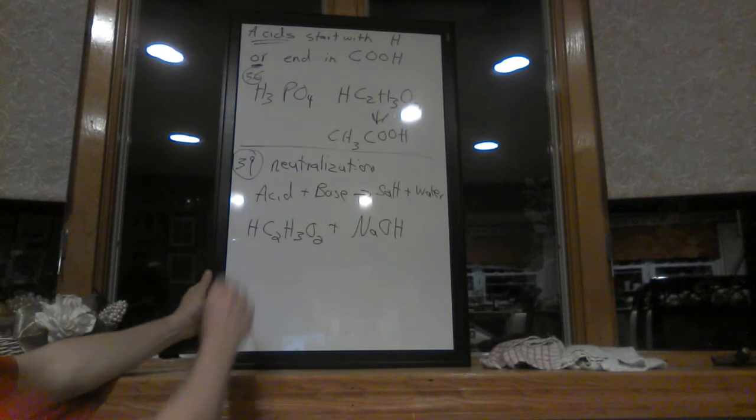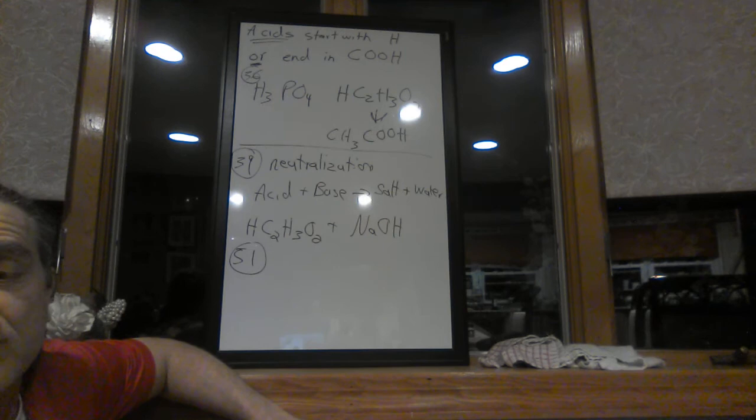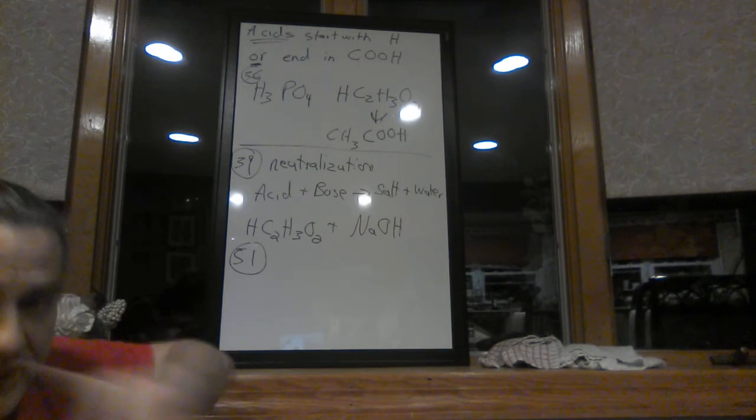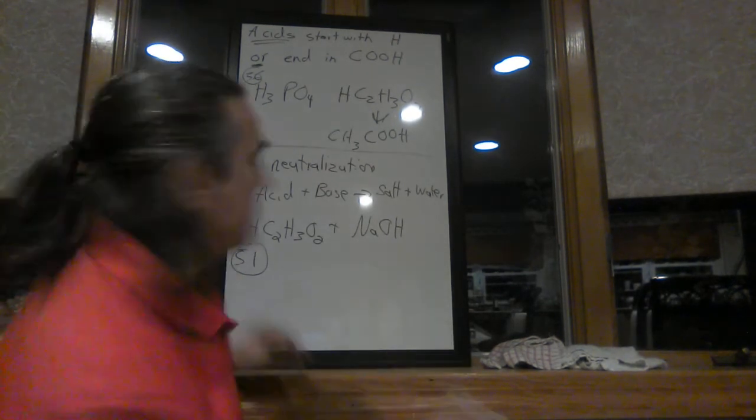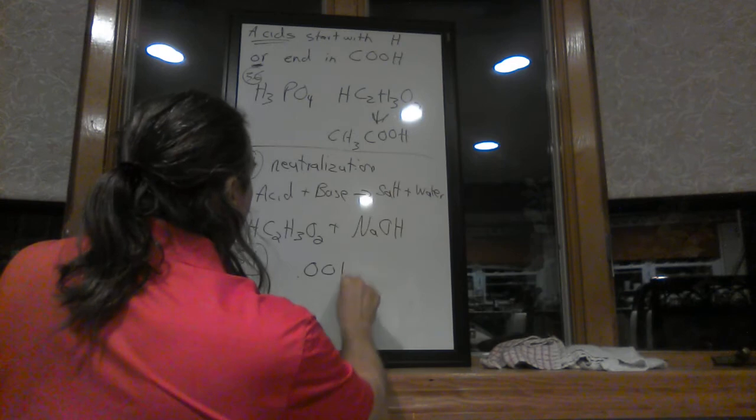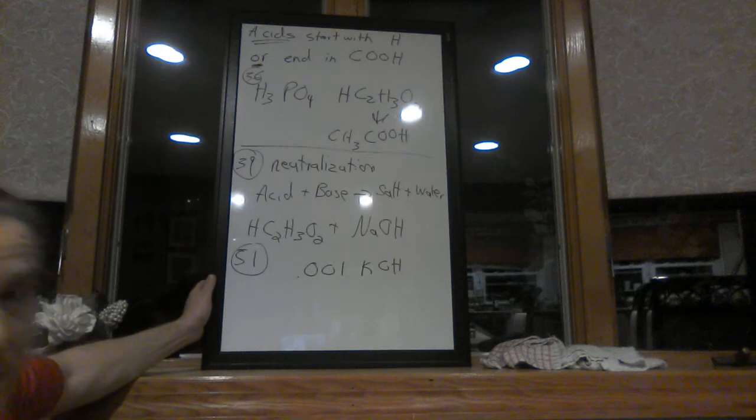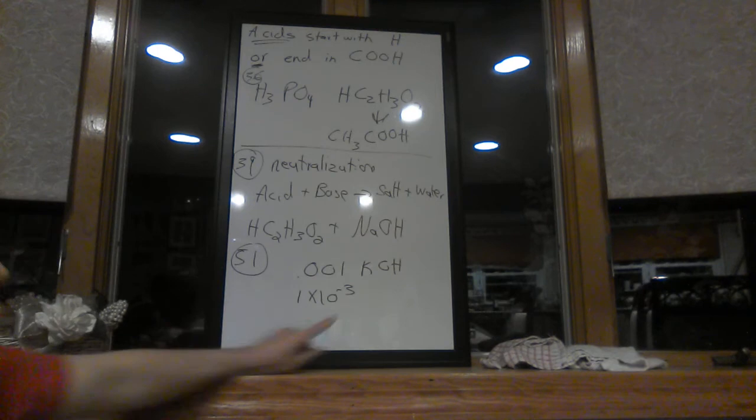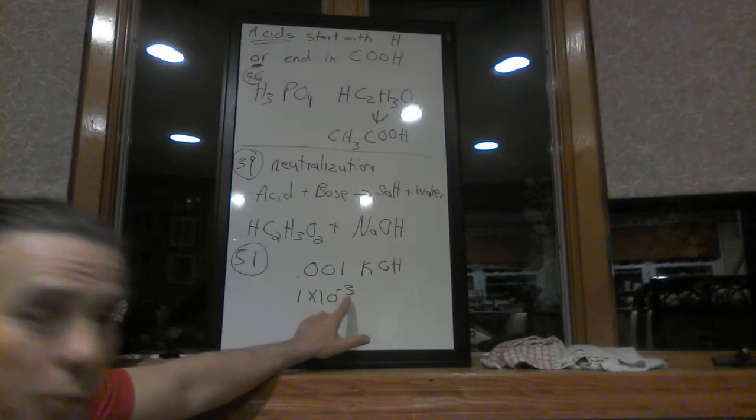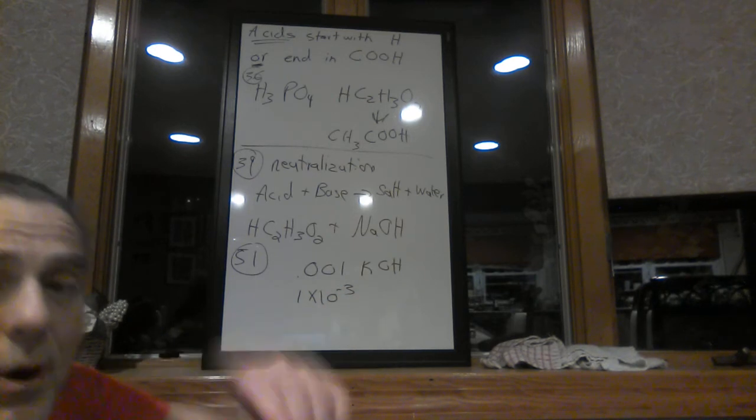Next question, moving on to 51. This is asking about the pH of a base. And the comment that I got in regard to this question, well, why isn't the answer 3? When you look to the stem of the question, it says what's the pH of 0.001 KOH? And then if you change this number, the 0.001 to scientific notation, it becomes 1 times 10 to the negative 3. So the negative log of this number would be 3. So you say to yourself, oh, the answer is 3.